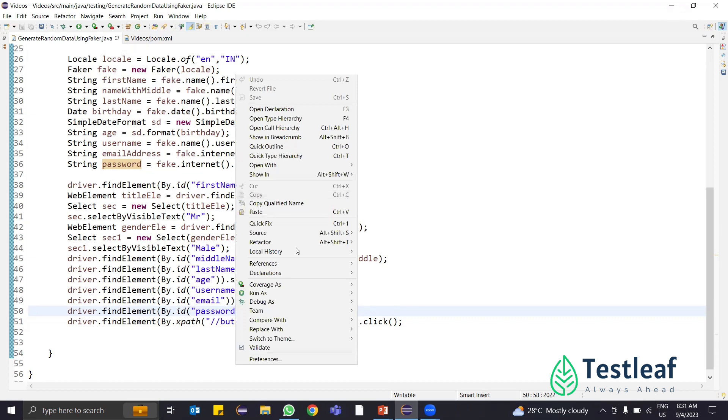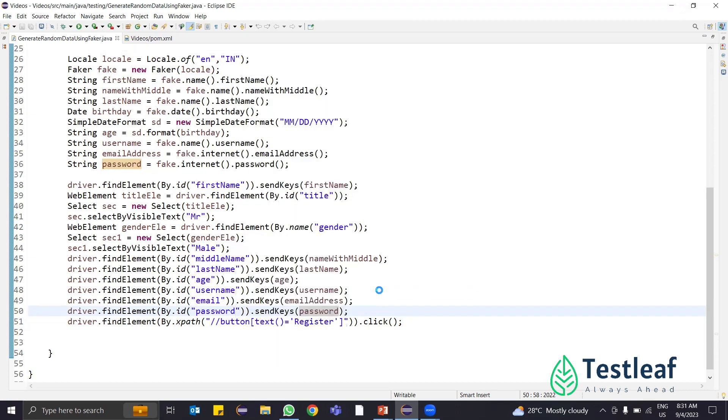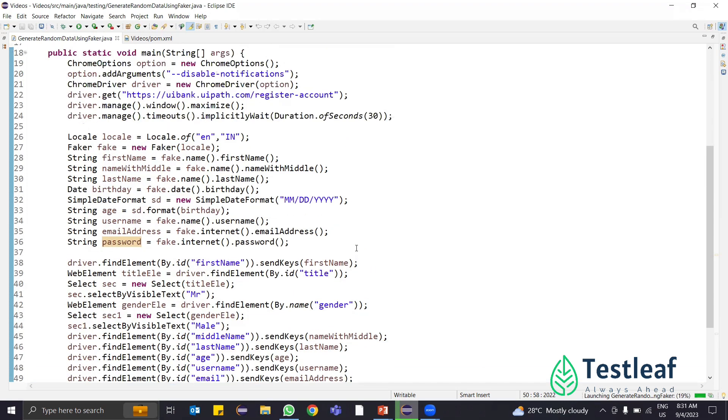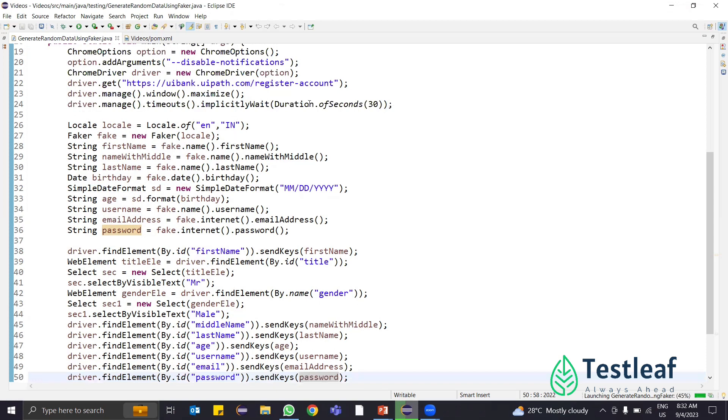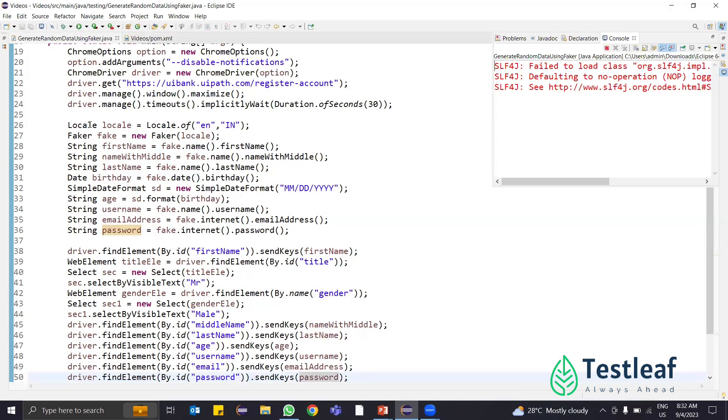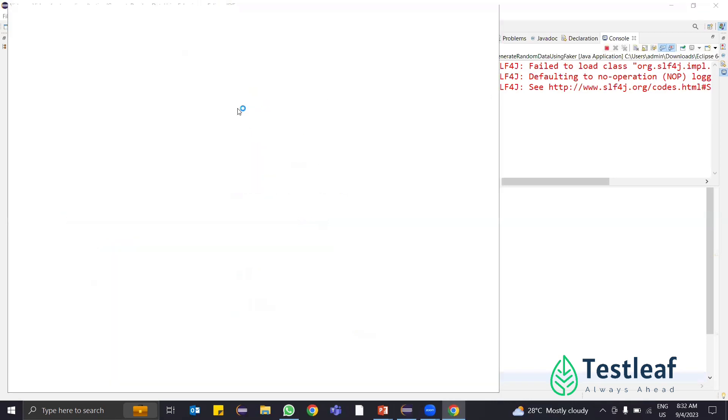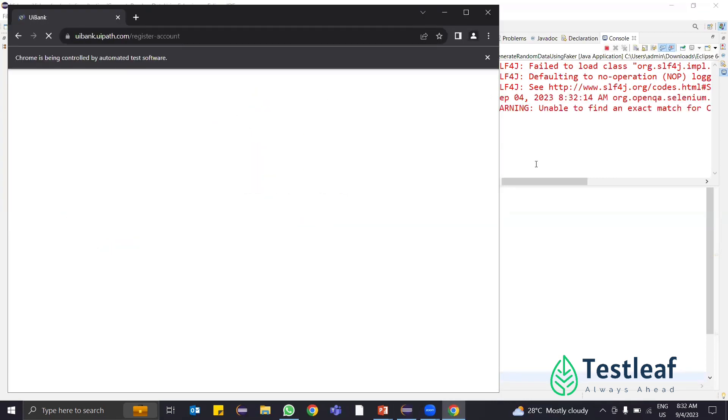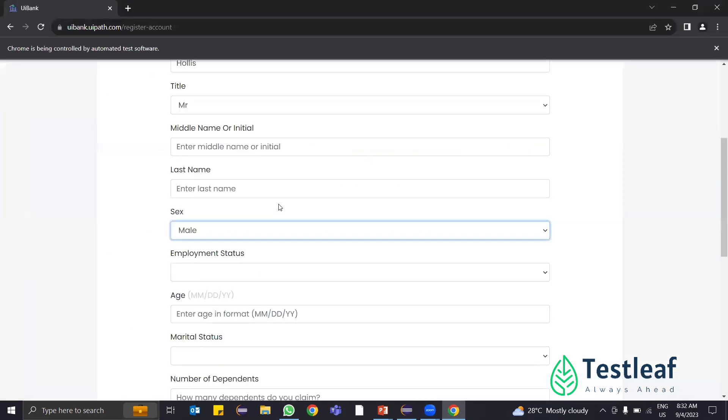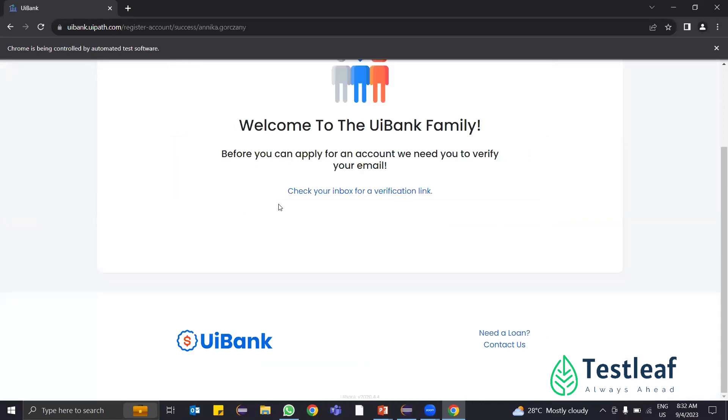Now let's run this code and understand how it is generated. Have a quick watch. It's going to launch the browser, load the URL, maximize, and I have applied implicitly wait. If I want to generate an Indian name or any local name, I have used a Locale class here. It's not only in Indian language, it can be in any language. UI Bank is loaded and now it is entering first name, last name, and it is finally done.